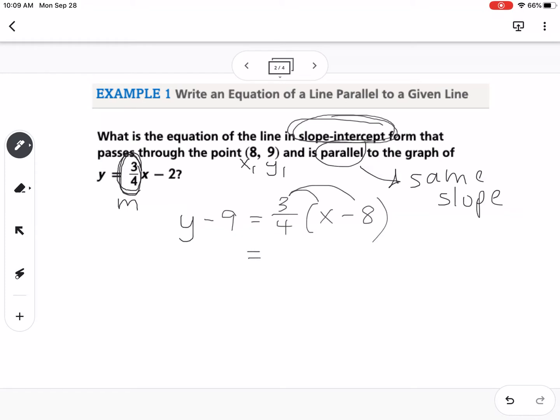So we're going to start by distributing. So that gives me 3/4 x. And then if I take 3/4 times 8, we can pretend it's 8 over 1. So 3 times 8 is 24 divided by 4 would be 6. So that's going to give me minus 6. And then I have y minus 9. You can use a calculator for this too. And then my last step is I want y alone. So I'm going to add the 9 to both sides. So I get y equals 3/4 x plus 3.